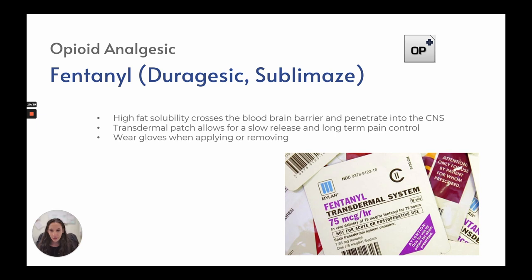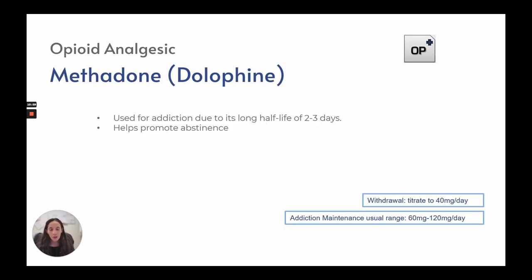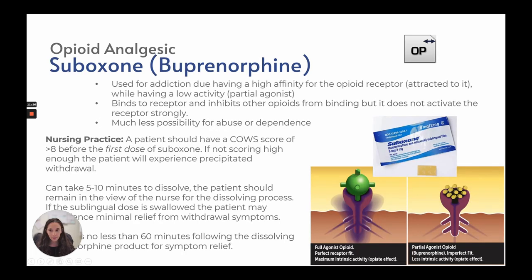Fentanyl on units is seen mainly as a transdermal patch for long-term pain control. Wear gloves when applying or removing. Fentanyl has high fat solubility and crosses the blood-brain barrier into the central nervous system. Methadone is used for addiction due to its long half-life of two to three days and promotes abstinence. In withdrawal, typical dose is titrated up to 40 milligrams a day. In addiction maintenance, the usual range is 60 to 120 milligrams per day, though patients sometimes fall outside this range.